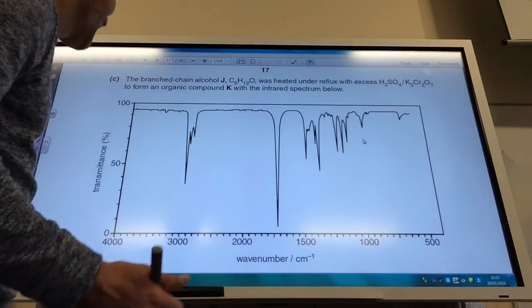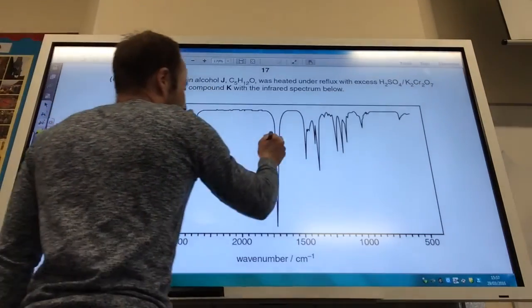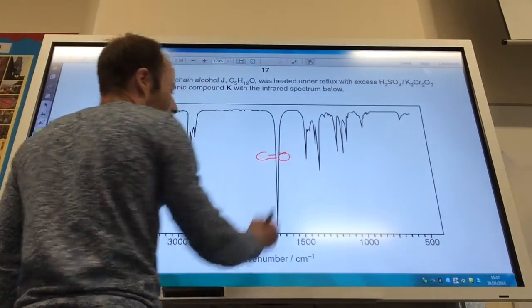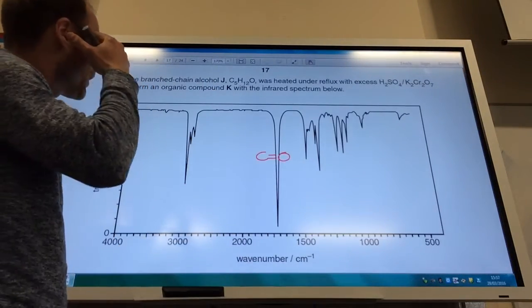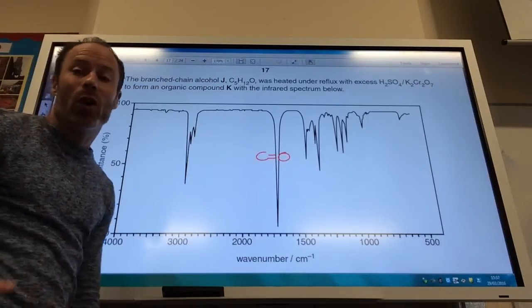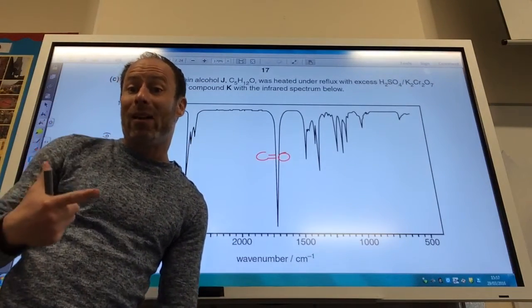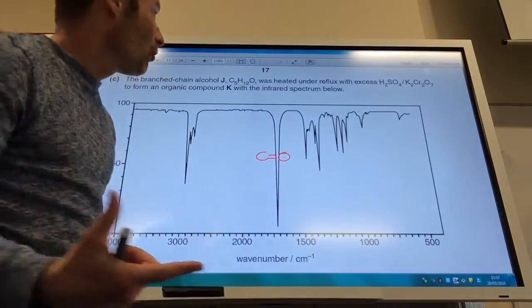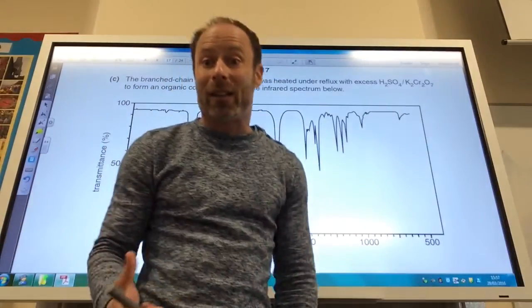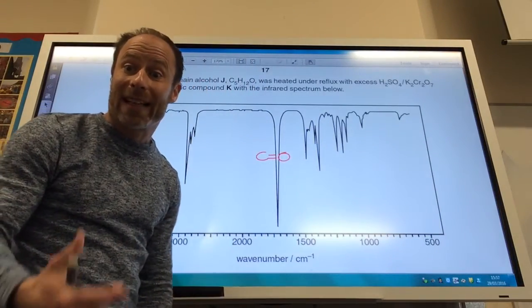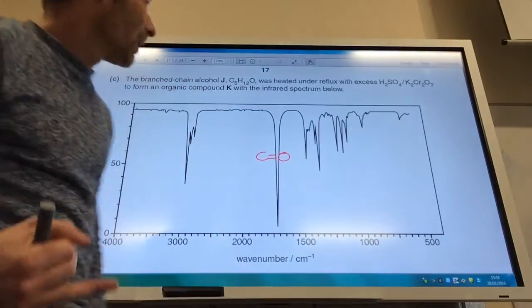So, let's have a look. This here is obviously C double bond O. That's quite straightforward. Have I got – what's my – if I'm oxidizing alcohol, what are my possibilities? It could become an aldehyde or ketone. As it's under reflux, if it was going to be an aldehyde, it would have gone straight to the carboxylic acid. So, I've got two options.